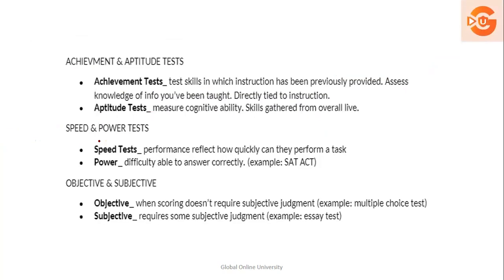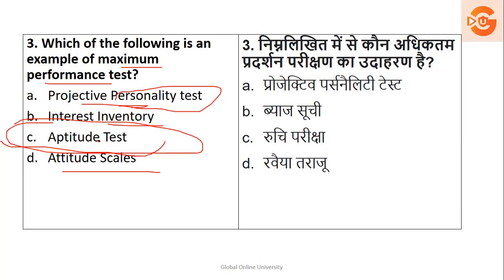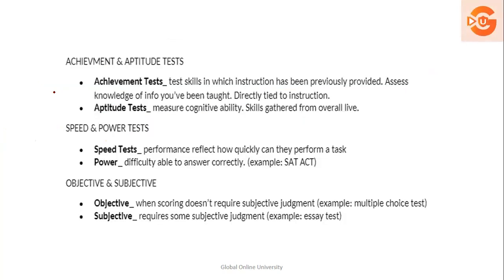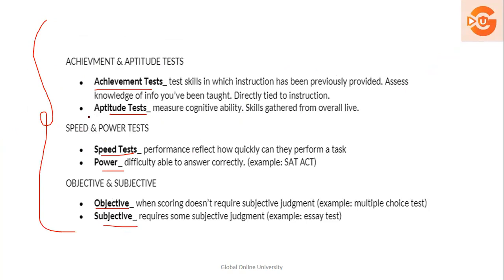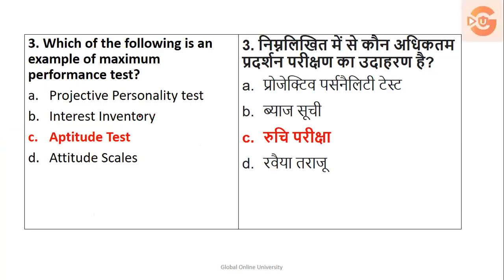Let's look at a small slide for this. A maximum performance test is used to find out a person's knowledge or ability. It is divided into achievement and aptitude, speed test, power test, objective test, and subjective test. Looking at the matching option here, it is related to aptitude test. So the right option for this question is aptitude test.